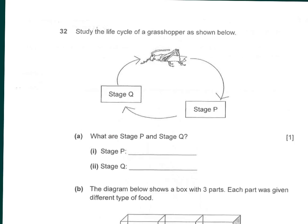Moving on to question 32: study the life cycle of a grasshopper as shown. We can tell straight away that for a grasshopper it is a three-stage life cycle. The characteristic part is that it has a young called the nymph stage. From this picture you can tell the diagram shown is the adult stage of the grasshopper because it has wings.